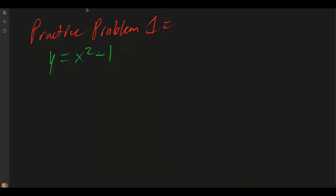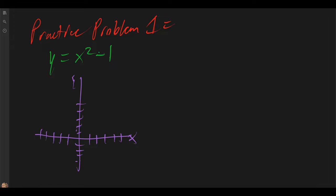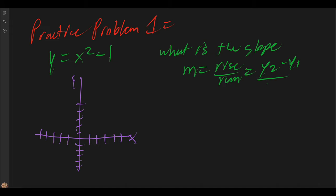Typically, when we have a graph we have a y and x axis. Whenever we look at our equation, we always need to check what the slope is. Slope is typically denoted as m, which is rise over run, and also y2 minus y1 over x2 minus x1. And b is typically our y-intercept. We can take parts from our linear equation and apply it here, but in this case we have x squared minus 1. Since we're dealing with a quadratic equation, we're going to have two different points in general.